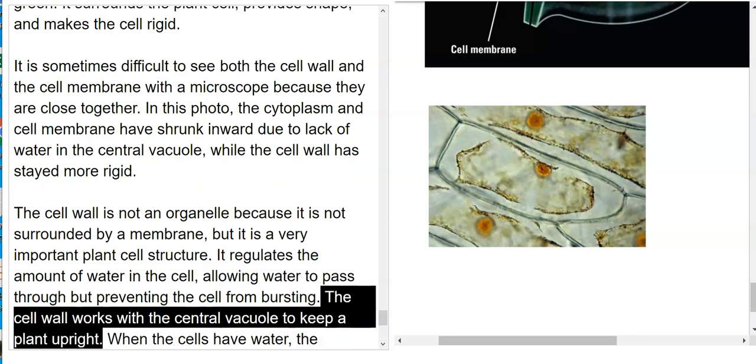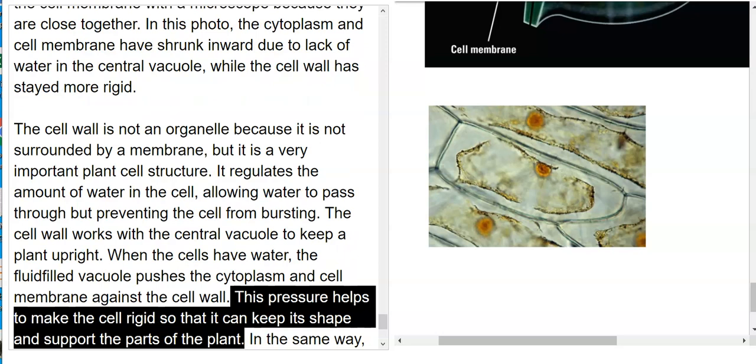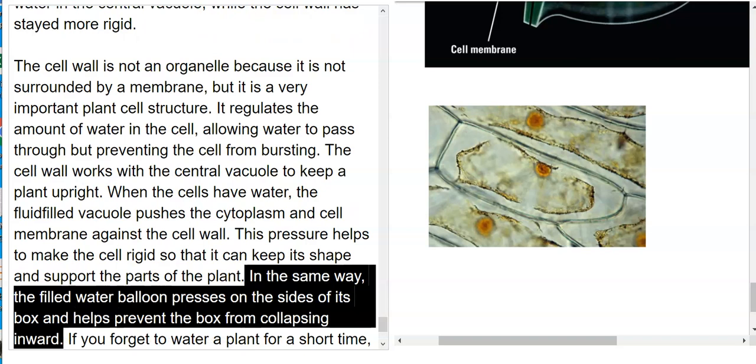The cell wall works with the central vacuole to keep a plant upright. When the cells have water—and that makes sense, you've seen a plant wilt before—when the cells have water, the fluid-filled vacuole pushes the cytoplasm and cell membrane against the cell wall. This pressure helps make the cell rigid so that it can keep its shape and support parts of the plant.